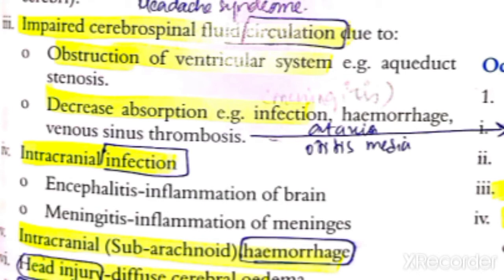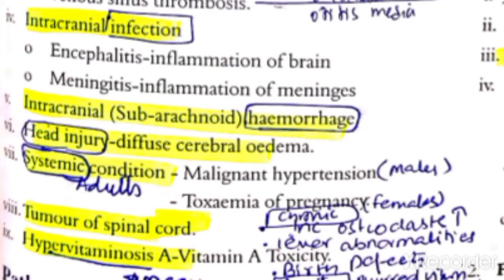The fourth cause is intracranial infection, such as meningitis or encephalitis. The patient will give history of fever. In meningitis, there will be neck stiffness. The fifth cause is intracranial hemorrhage, including subarachnoid hemorrhage, which obviously raises intracranial pressure. The sixth cause is head injury, which leads to cerebral edema, and then papilledema can occur.